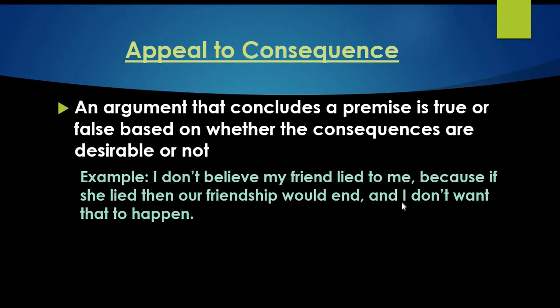Appeal to consequence is an argument that concludes a premise is true or false based on whether the consequences are desirable or not. For example, I don't believe my friend lied to me because if she lied, then our friendship would end, and I don't want that to happen. The appeal to consequence is trying to get something to be true or false based on the outcomes, whether you want them or not.